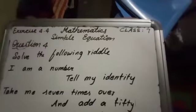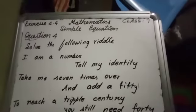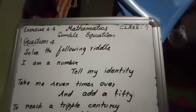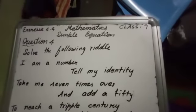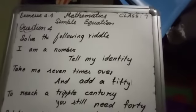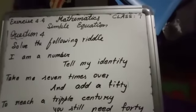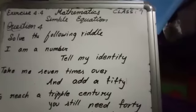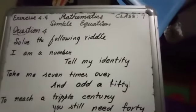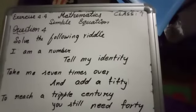Next, to reach a triple century - century means 100, triple century means 300 - you still need 40 to become 300. Still you require 40, so you have to add 40 for that to become 300.